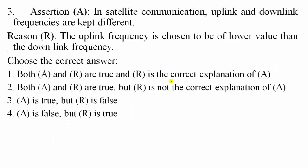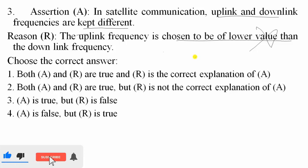Question 3: In satellite communication, uplink and downlink frequencies are kept different in order to avoid interference. The statement that uplink frequency is lower than downlink frequency is wrong. Uplink frequency is actually higher than downlink frequency, because if downlink were greater, the satellite would have to produce more power — which is not practically possible. Satellite communication is power-limited, with power generated via solar cells. So option 3 is correct: assertion is correct but reason is false.